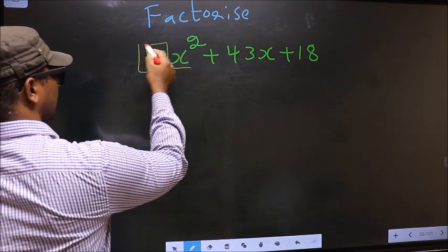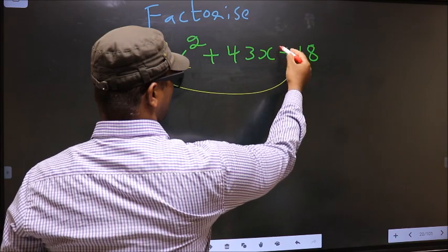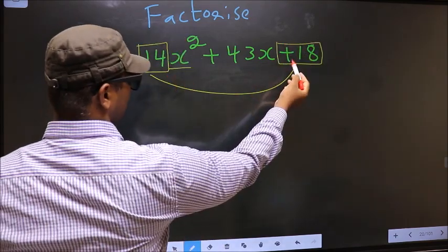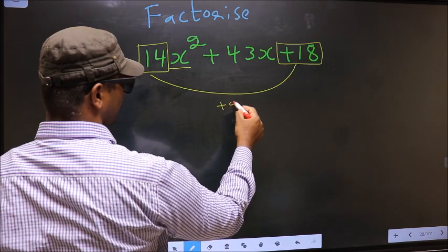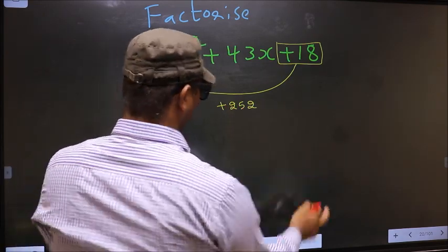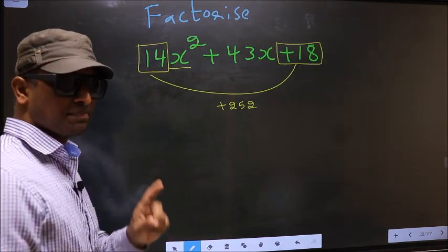14 should be multiplied to the constant, that is +18. 14 into +18 is +252. This is your step 1.